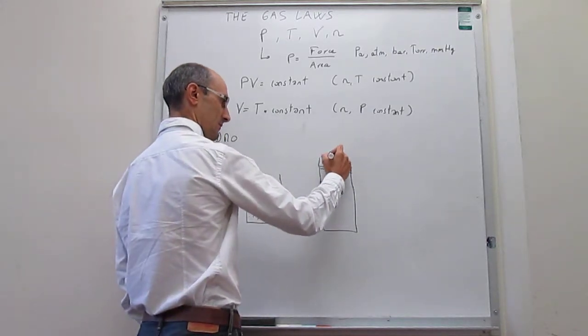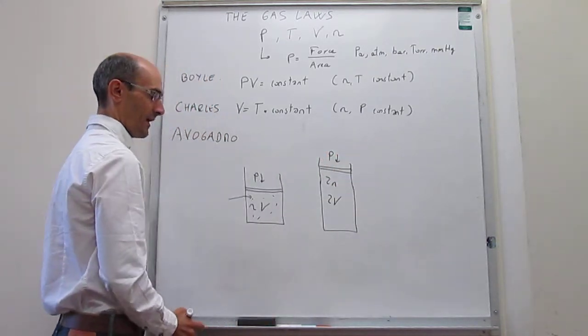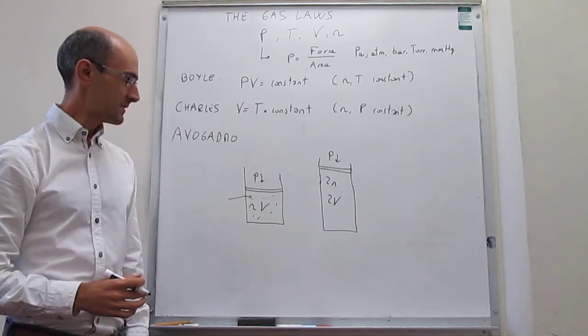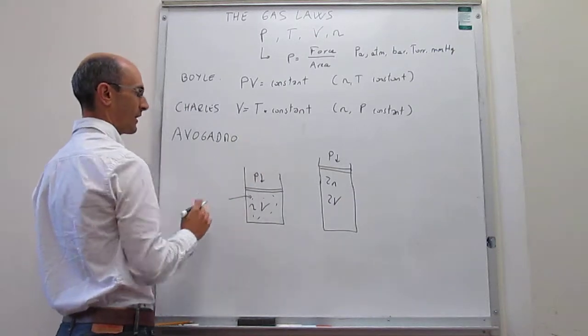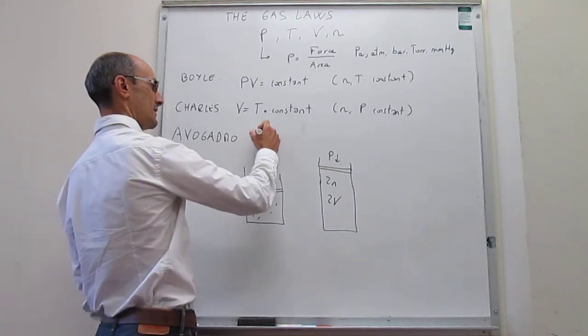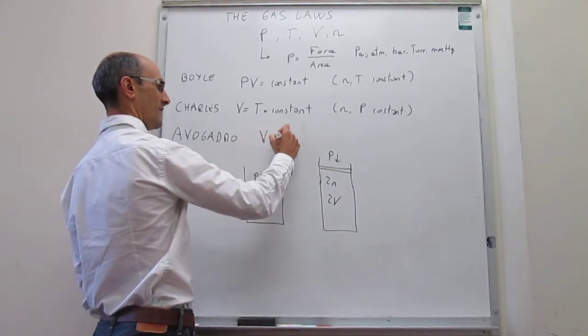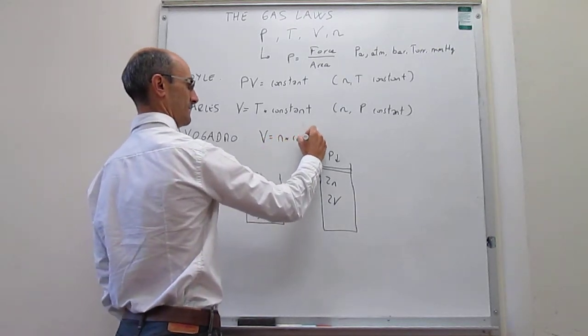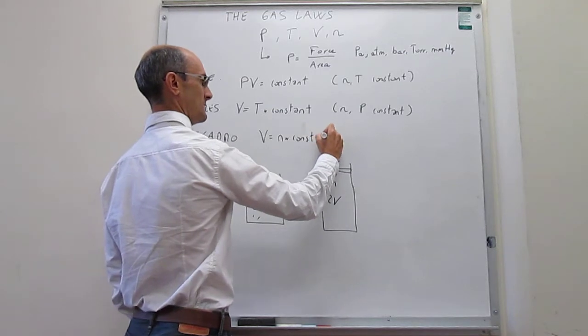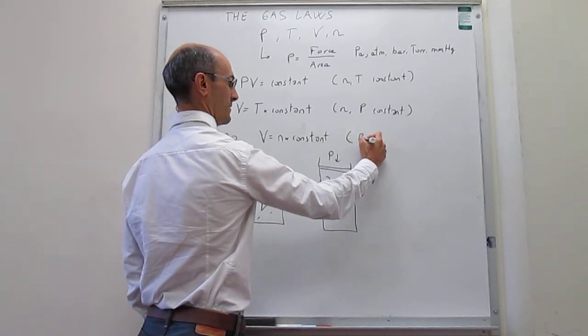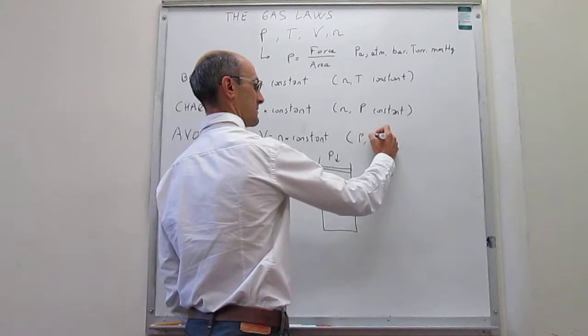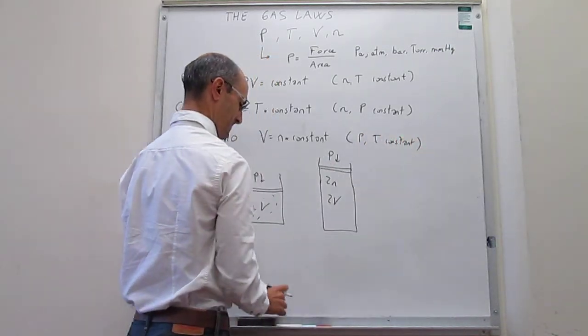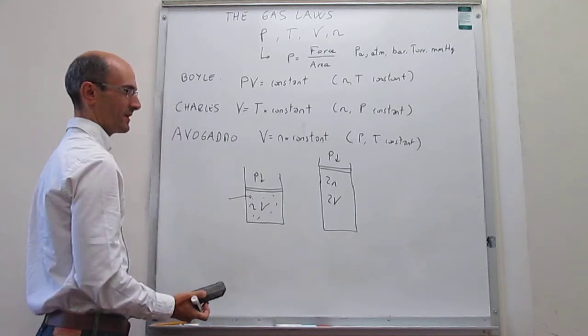And this happens as long as you don't change the pressure and the temperature has to be also constant. So we can then write what Avogadro's law is. And that is that the volume and the number of moles are directly proportional as long as the pressure and the temperature are constant. And this happened around 1800 or so.